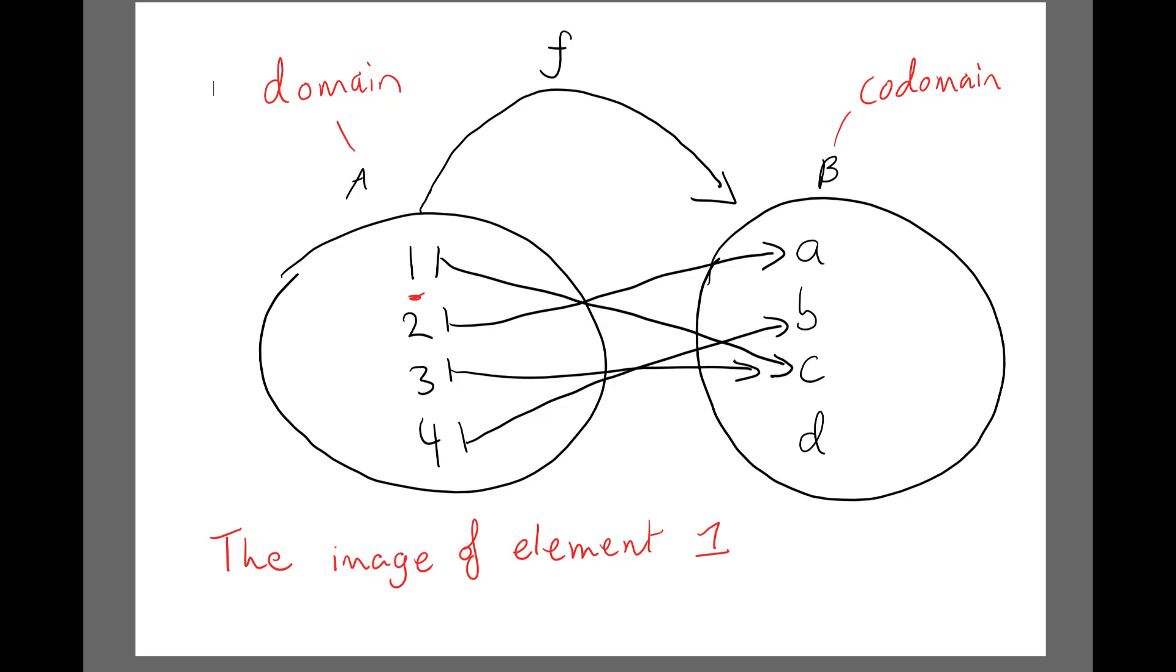All we need to say now is that the image of element 1—because if I look up here, 1 is an element or member of set A—is C. What does it map to? C.